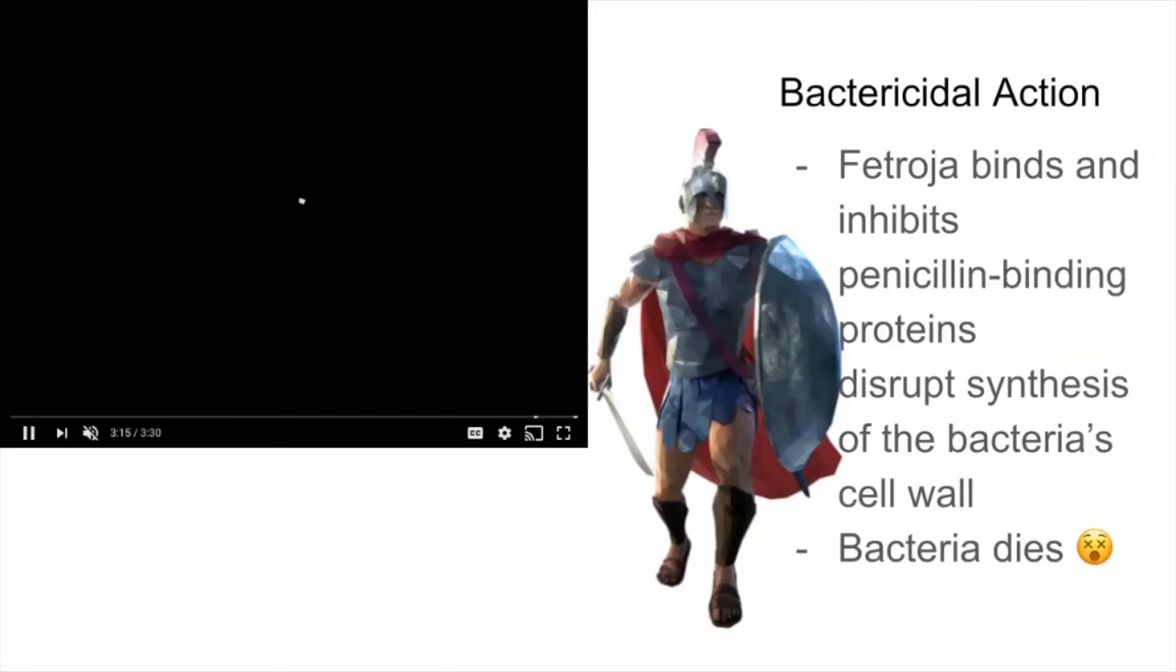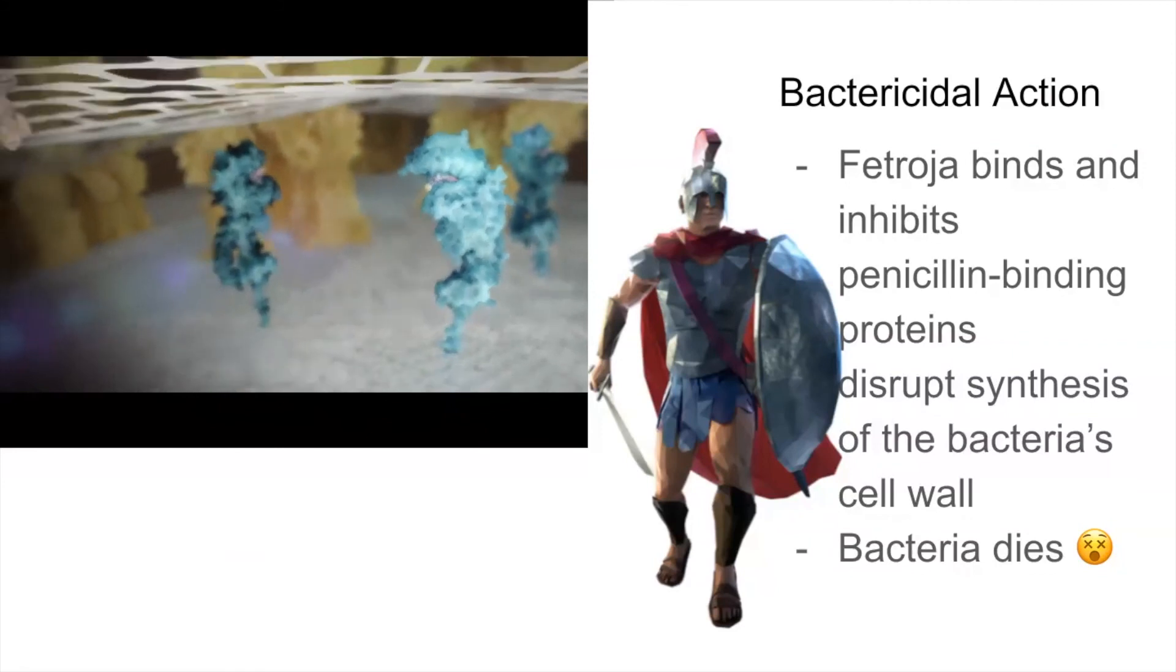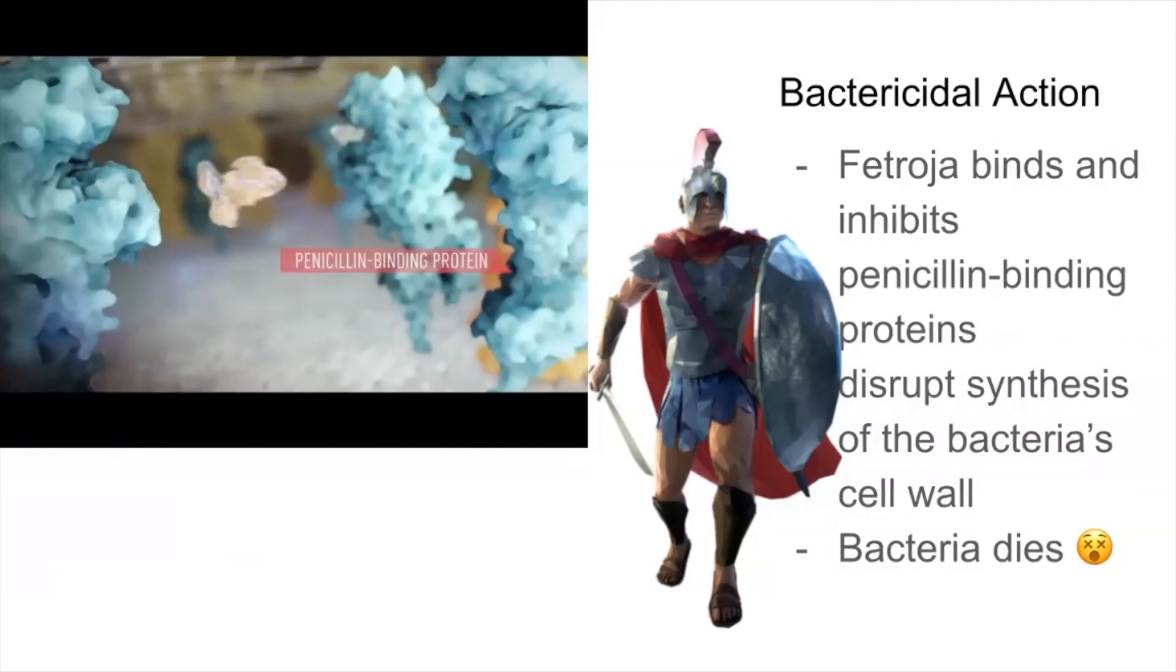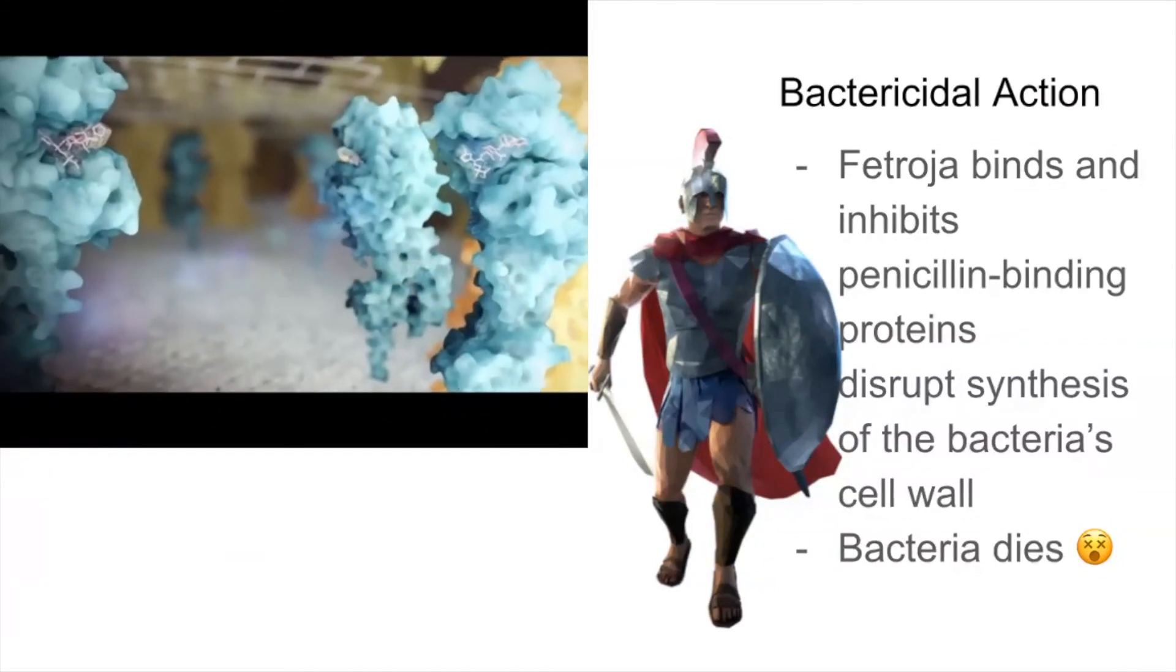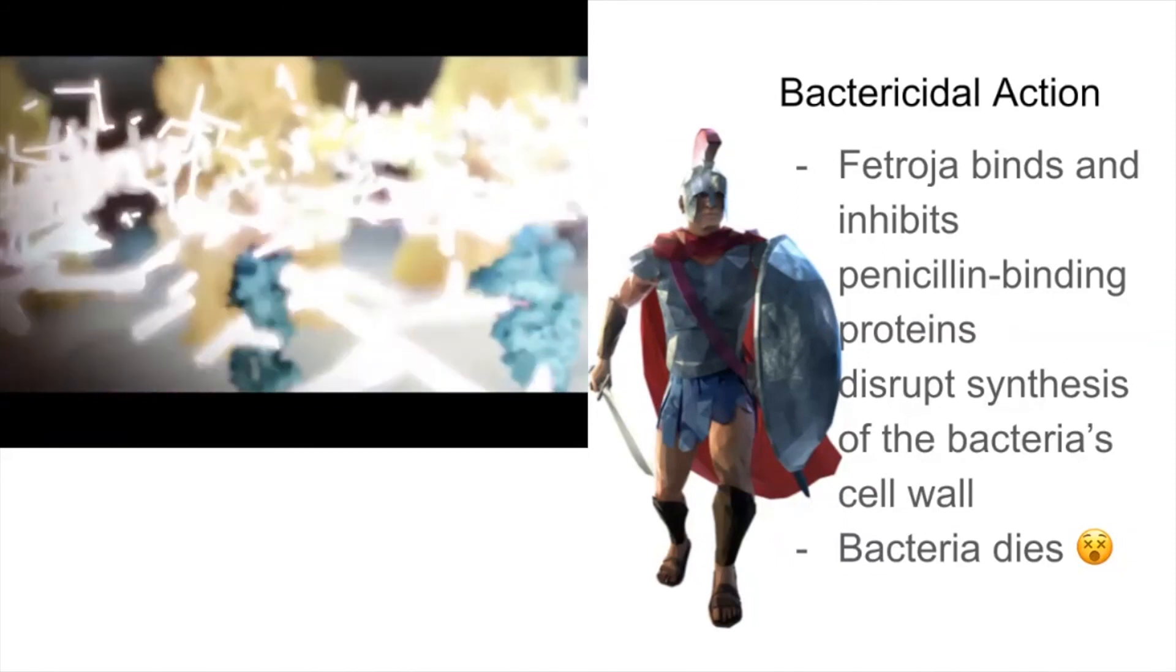Because Fetroja is a beta-lactam antibiotic, it exerts its bactericidal action by binding to and inhibiting the function of the penicillin-binding proteins in the bacterial periplasm. This disrupts the peptidoglycan synthesis, killing the bacteria.